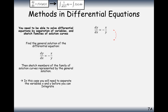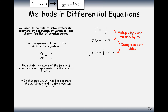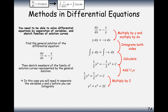First we need to separate the variables: multiply y onto the left and multiply dx onto the right. The y moves to the left and the dx moves to the right-hand side. Now we can integrate — put integral symbols at the front of both sides. On the left-hand side it becomes half y squared, and on the right-hand side it becomes minus a half x squared, plus c on one side. Grouping this together gives us y squared plus x squared equals 2c.